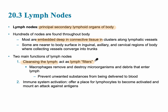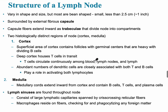The structure of lymph nodes specifically: they are bean or kidney shaped and very small. They have an external fibrous capsule, and those capsule fibers extend inward as trabeculae. There are two major histological regions: an outer cortex and an inner medulla. The cortex is the superficial region containing germinal centers within follicles, which house dividing B cells — more visible during an infection as B cells divide to produce antibodies. The inner medulla has medullary cords that extend inward.